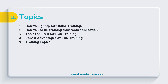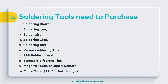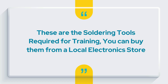Next: what are the tools required for ECU training? This is one of the biggest questions for online enrolling students, but here is a solution. Number one: soldering blower is required. Soldering iron, soldering wire, soldering wig, soldering flux, and various types of soldering tips are also required. An ESD mat is required, as well as tweezers with different tip types. A magnifier, mobile camera, or digital camera to magnify images clearly. And finally a multimeter — it is really most important. An LCR meter or auto-range multimeter is also fine. All these tools can be bought from local electronics stores.